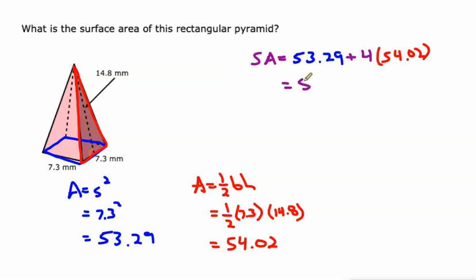So that would be 53.29, four times that 54.02 would be 216.08. And when we add that to the 53.29, we get the total surface area, which is 269.37 square millimeters.